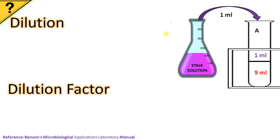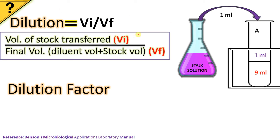To calculate dilution of this test tube A, the equation is Vi by Vf. That means Vi is a volume of stock transferred or initial volume that is 1 ml. Whereas Vf is the final volume, that is this 9 ml of the diluent plus the 1 ml transferred that makes 10 ml.